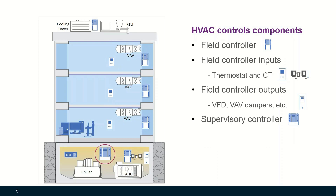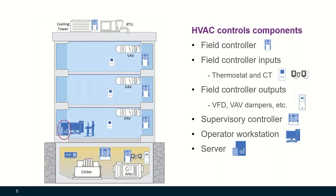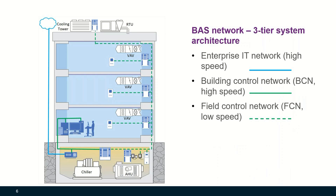There's another type of controller called a supervisory controller. And then you have an operator workstation, a server, and a network communication interface. Modern building automation systems are networked systems. In this three-tier system architecture, there are the enterprise IT network (blue line), building control network (green line), and the field control network (dotted green lines).